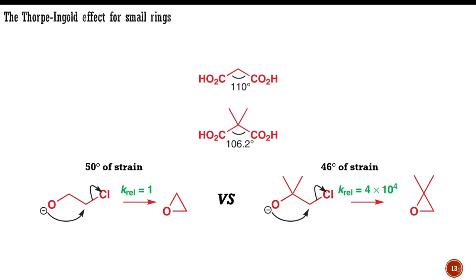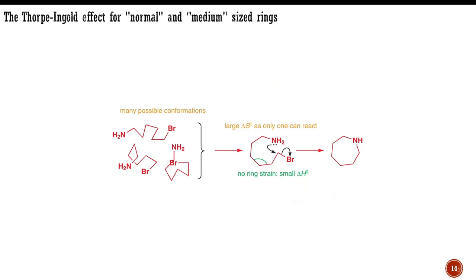However, this part of the argument works only for small rings. For larger rings, we need another explanation, and it involves entropy. We will use the pyrrolidine-forming reaction as an example. We have explained the effect of entropy of activation on the rate of ring formation.